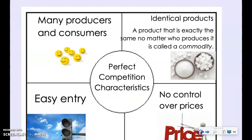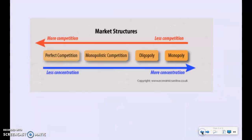To summarize, perfect competition characteristics include many producers and consumers, identical products, easy entry, but no control over prices for producers — the market equilibrium based on supply and demand determines the price. Remember, you are going to be looking at four different market structures. We just talked about the first; you've got three more ahead of you in this chapter — monopolistic competition, oligopolies, and monopolies. Thank you for listening and we'll talk to you next time.